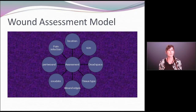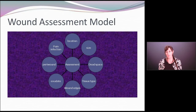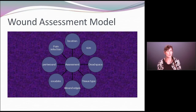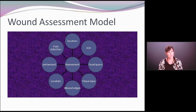The exudate — is there a little, is there a lot? What is the character of that exudate? What do the wound edges look like? And what type of tissue do we have? And then finally, dead space — is there undermining or tunneling in that wound? That's very important to address, as it will also be very important in determining how you're going to manage the wound.